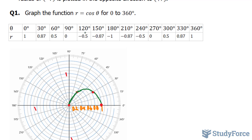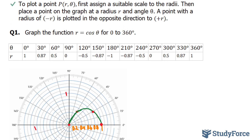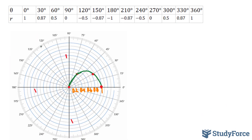At 120 degrees, we have a radius of negative 0.5. Recall that a point with a negative radius is plotted in the opposite direction. So at 120 degrees with negative 0.5 — which is the midway point between 1 and 0 — instead of being plotted at 120 degrees, I'm going to plot it in the opposite direction, right here.